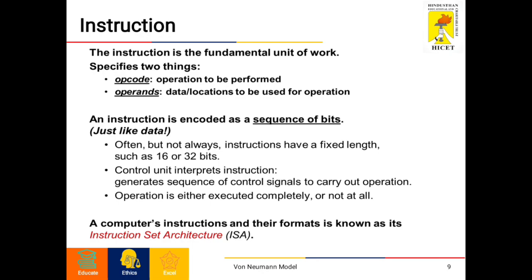An instruction is the fundamental unit of work. It specifies two things: opcode and operands. Opcode is the operation to be performed — such as addition, subtraction, arithmetic, or logical operations. Operands refer to the data or location to be used for the operation; the data can be numerals, variables, or anything, and the location is a place in memory. An instruction is encoded as a sequence of bits, that is, zeros and ones.